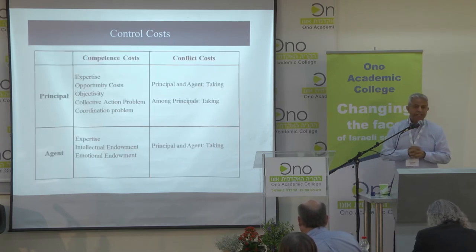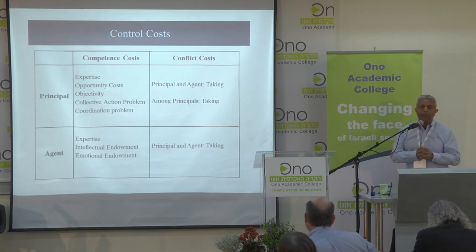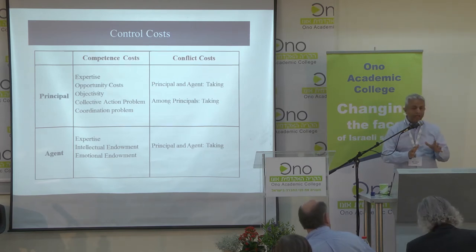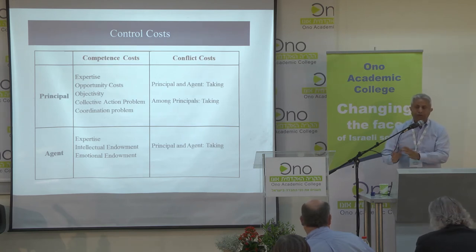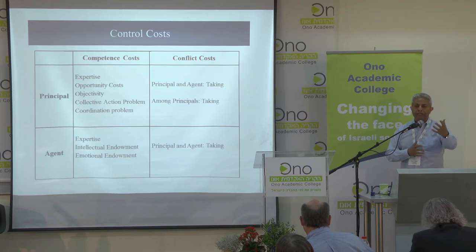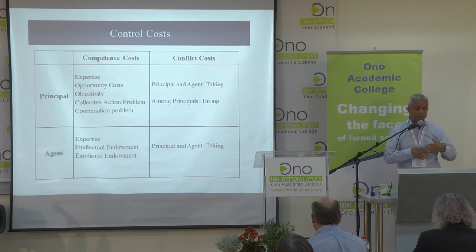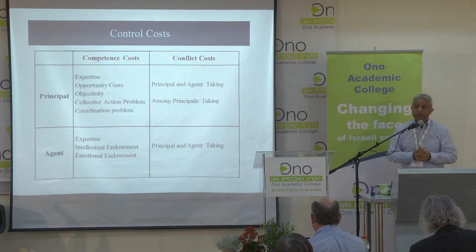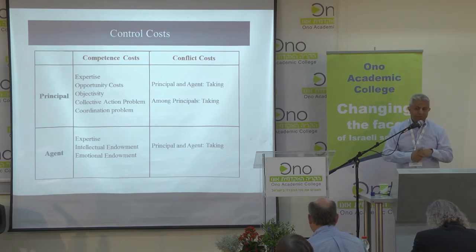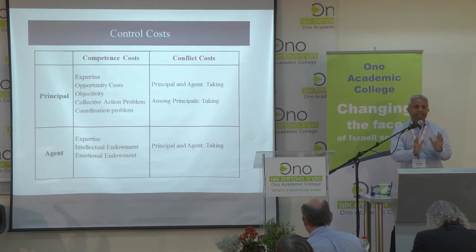Once we have that, it is easy to see a two-by-two matrix: competence costs and conflict costs of the principal and the agent. For the principal's competence costs, this includes expertise, opportunity cost, objectivity, collective action problems, and coordination problems. For the agent's competence, it includes expertise, intellectual endowment — meaning whether they're smart — and emotional endowment — meaning whether they're a reasonable person.